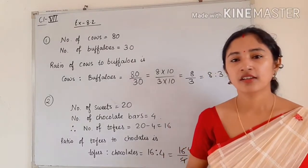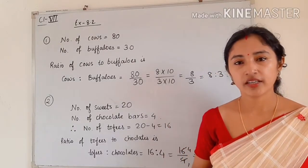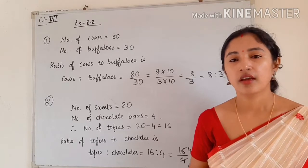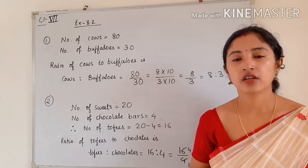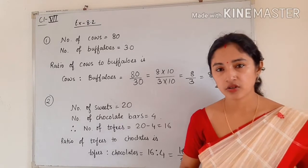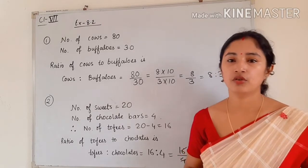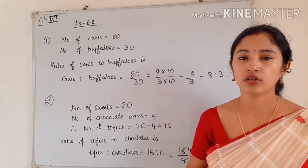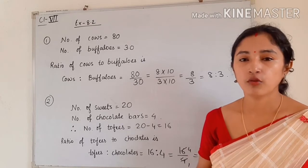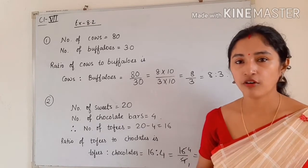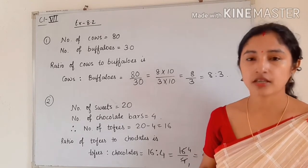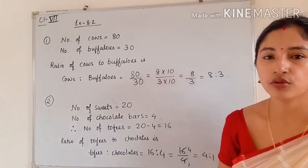Hello students of class 7. I have already started the chapter on ratio and proportion, and in the first lecture I discussed the basic concept of ratio. In this lecture, I am going to discuss the application part — the word problems of ratio. Let us start with exercise 8.2.